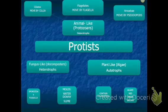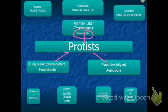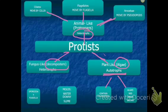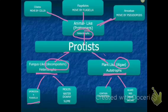Here's a summary map of all protist types. Animal-like protists are heterotrophs, also called protozoans — with three types: amoeba moving by pseudopods, flagellates moving by flagella, and ciliates moving by cilia. Plant-like protists, also called algae, are autotrophs that contain chlorophyll and come in red, green, and brown types. Fungus-like protists are decomposers and heterotrophs — they move by flagella, reproduce by spores, and include water, downy, and slime molds.